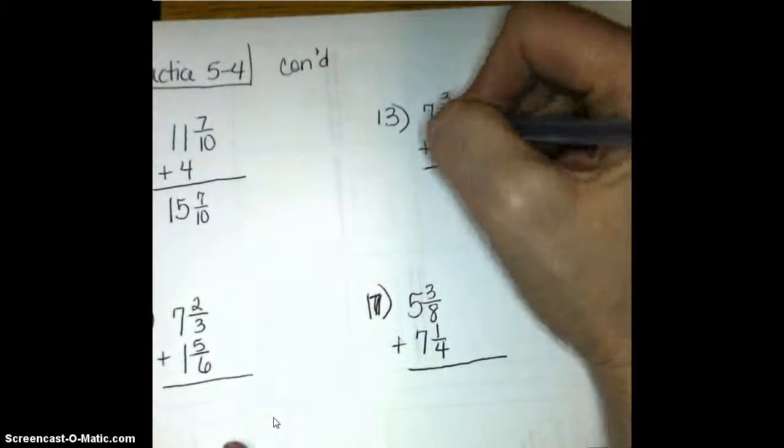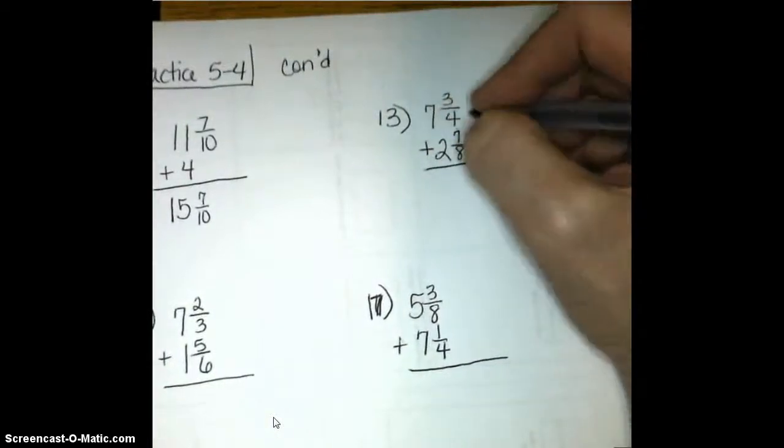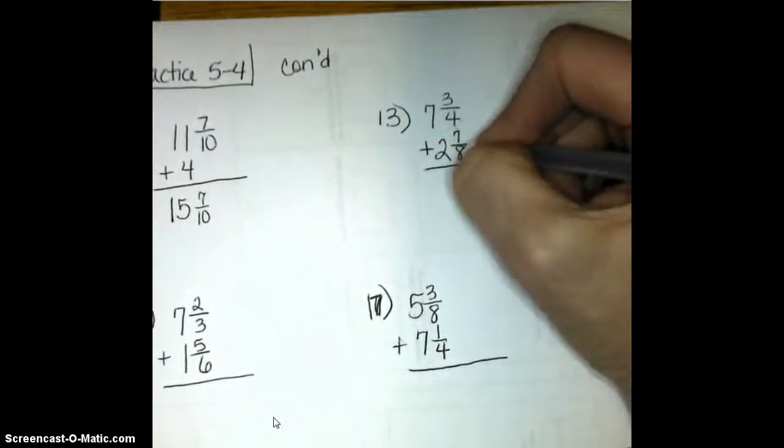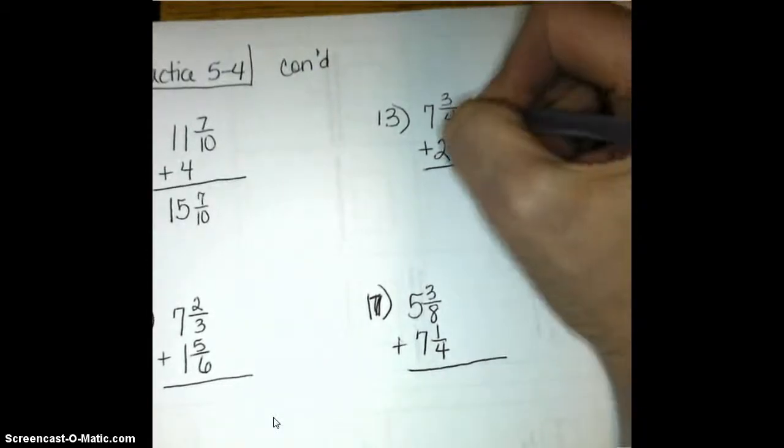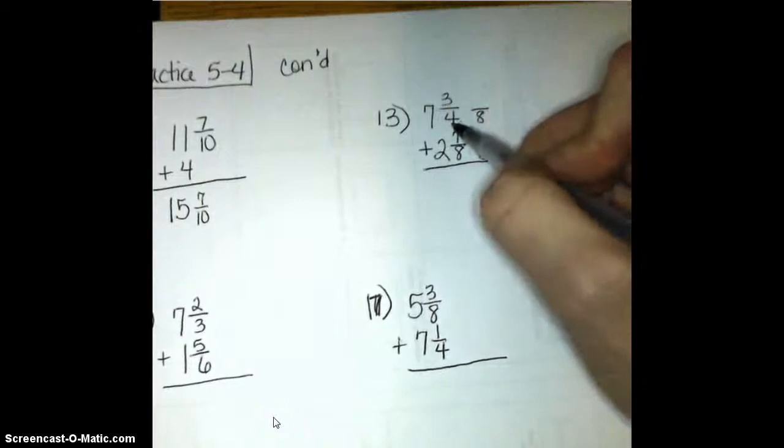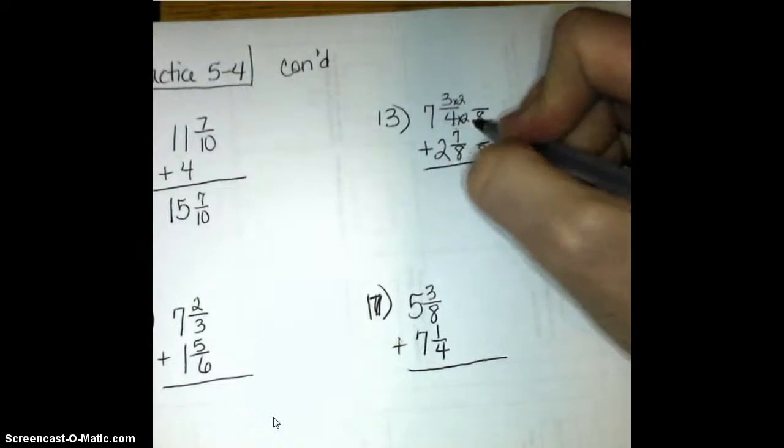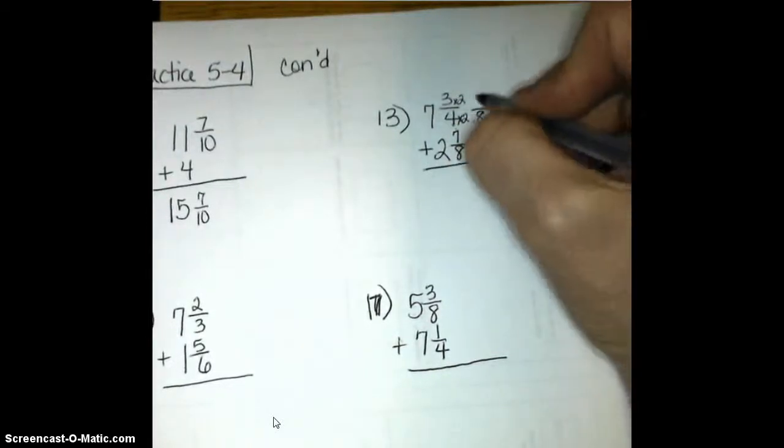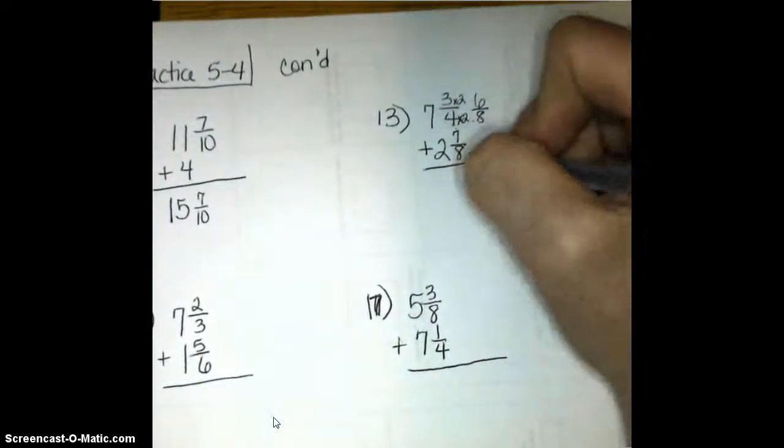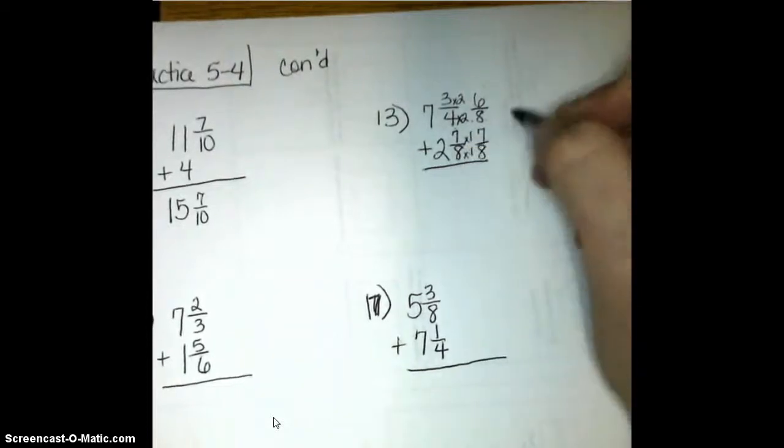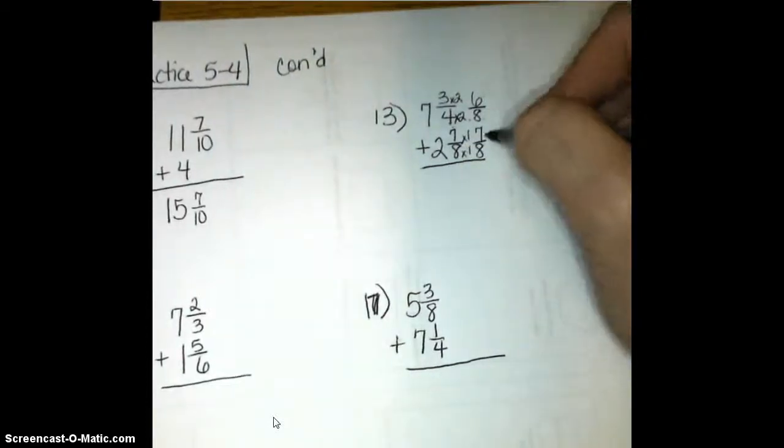Number 13, we have 7 and 3 fourths plus 2 and 7 eighths. When I look at my 4 and my 8 as my denominators, I notice that I need to have a common denominator, and that common denominator is going to be 8 because I can make my fourths into eighths by cutting each of those pieces into 2 more pieces, or it's the second equivalent fraction. So 3 fourths would be the same as 6 eighths. 7 eighths would be the same as 7 eighths. It does not change. So now I can add my eighths together.